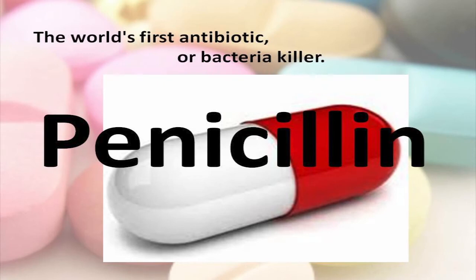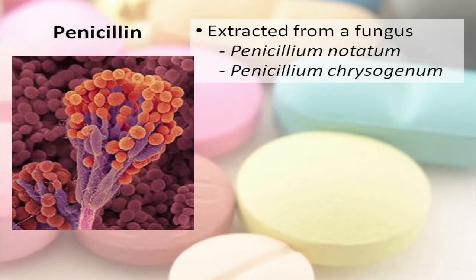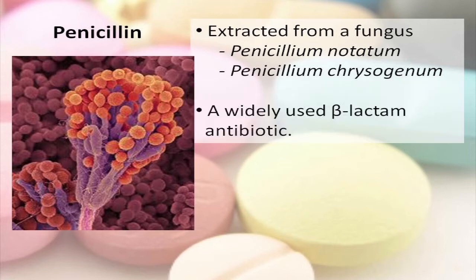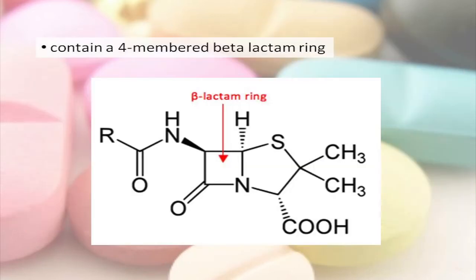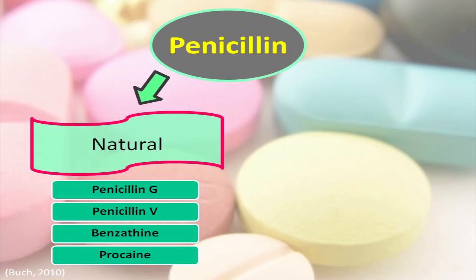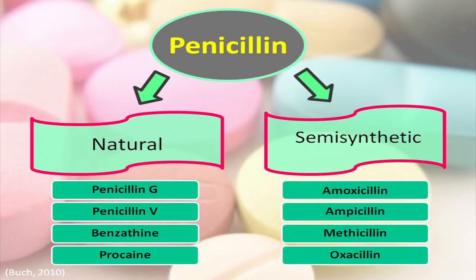Originally extracted from a fungus, Penicillium notatum and Penicillium chrysogenum, it is widely used as a beta-lactam antibiotic to treat infection by gram-positive microorganisms. Penicillin inhibits the production of cell walls, thus preventing bacteria from proliferating. This is the basic structure of penicillin. Penicillin could be found in two distinctive types: the natural and the synthetic.